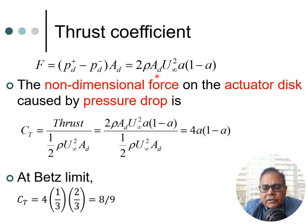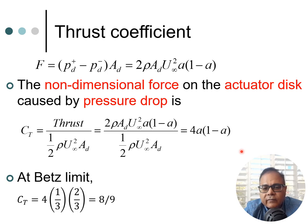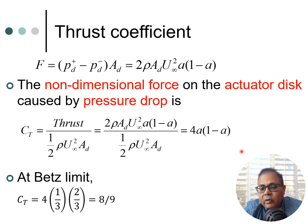We can also derive the thrust coefficient. Starting from the force expression, the non-dimensional thrust is C_T equals thrust divided by (half rho u-infinity squared A_d). After cancellations, this gives C_T equals 4a(1 minus a). In wind turbines we are primarily interested in power, not thrust. Thrust is important for rotors that generate it — like helicopters and propellers — where power is expended. For a wind turbine, power is extracted and thrust is a byproduct.